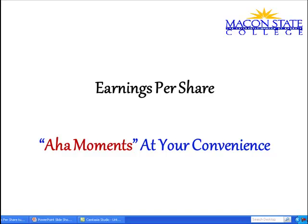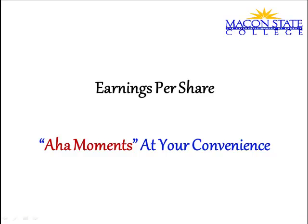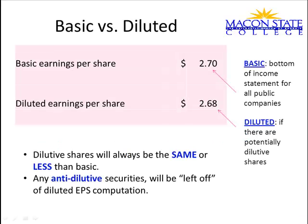Today we're going to study earnings per share. Earnings per share must be presented at least as basic earnings per share if there are no potentially dilutable shares. If there are potentially dilutive shares, even if they're not dilutive and therefore are not in the calculation, you must have a two-part presentation: basic earnings per share and diluted earnings per share.